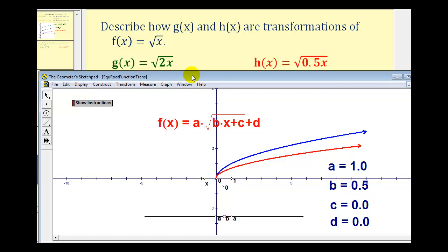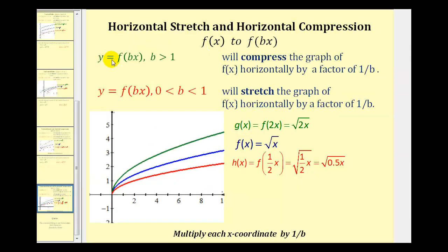So this last transformation can be a little tricky. But to summarize: if we have y equals f of bx, where b is greater than one, we'll have a horizontal compression by a factor of one over b, which we had here in green. And if we have y equals f of bx, where b is between zero and one, we have a horizontal stretch by a factor of one over b, which we had here in red. I hope you found this overview helpful. We will take a closer look at these transformations in the next several videos.